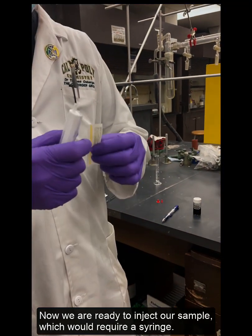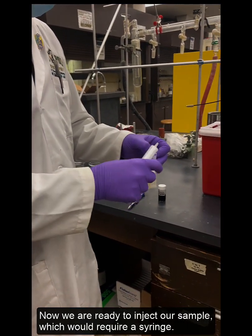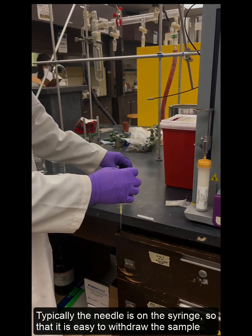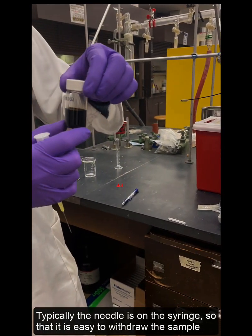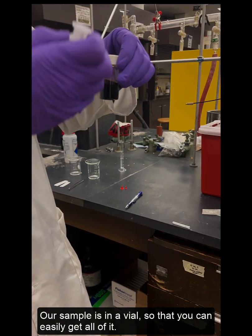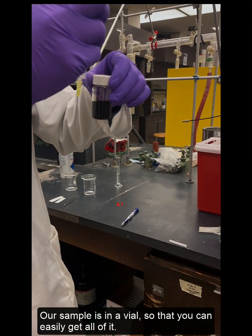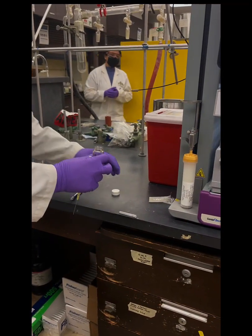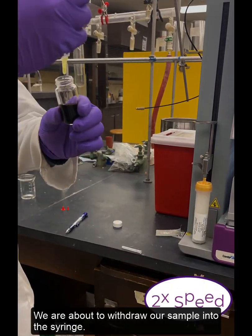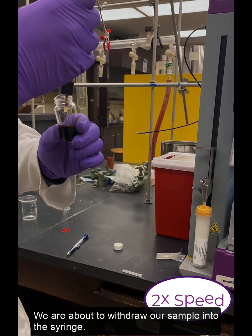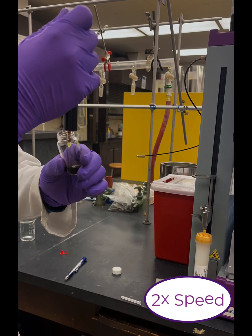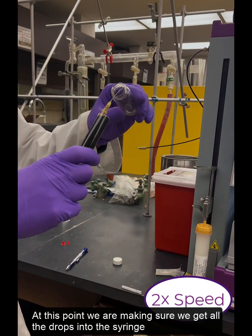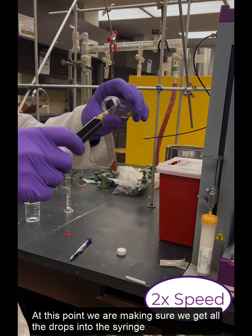We are ready to inject our sample which would require a syringe. Typically the needle is on the syringe so that it's easy to withdraw from our sample, and the sample is usually in a vial so you can easily get all of it. We're about to withdraw our sample into the syringe. We're just making sure we get all the drops from the syringe and ensuring there's no air bubbles in there so we could load our sample in properly.